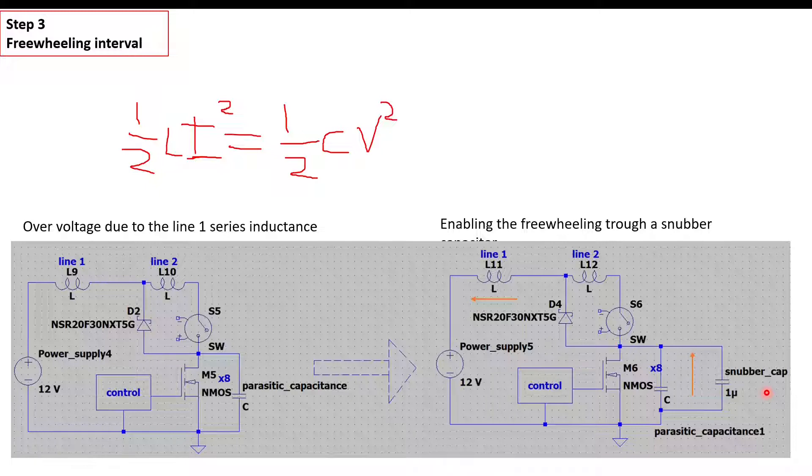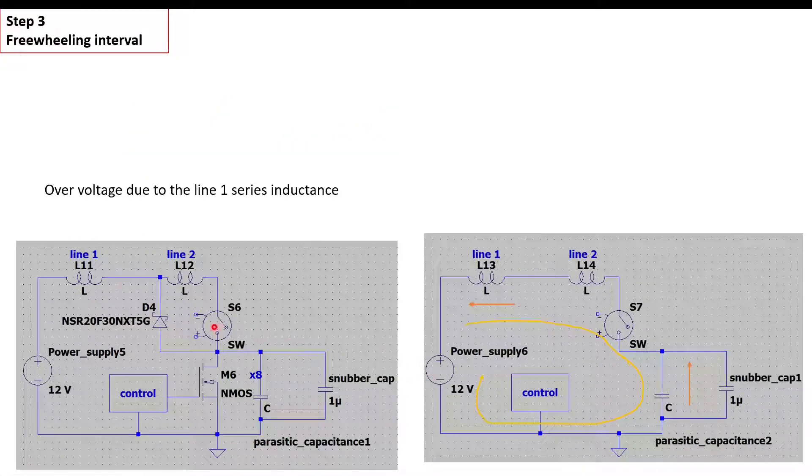You just apply this capacitance, like one microfarad or four microfarads, around this range. We don't need fast switching, so we can apply this without too much losses. When this line is discharged, the current flows through this mesh, this loop, and the capacitance prevents the over-voltage across the MOSFETs.